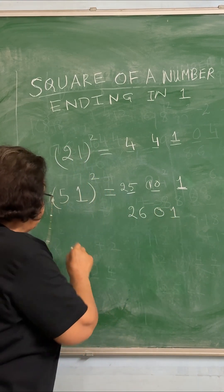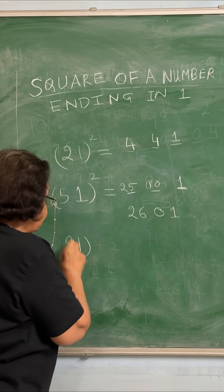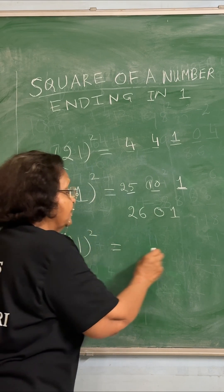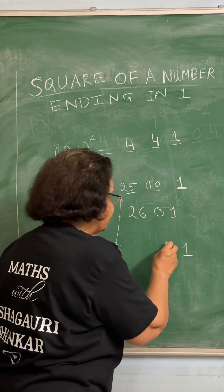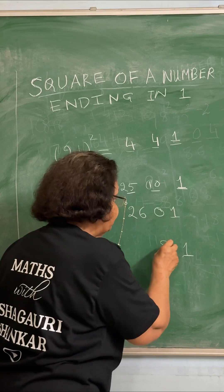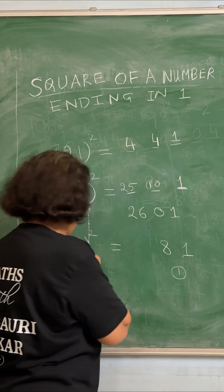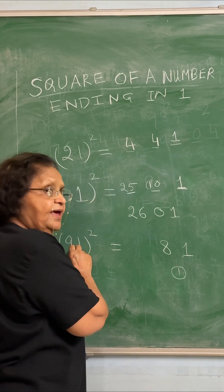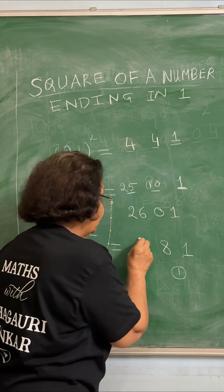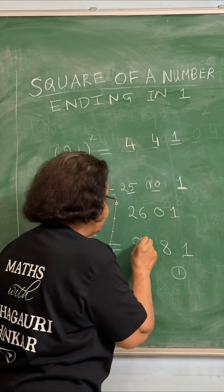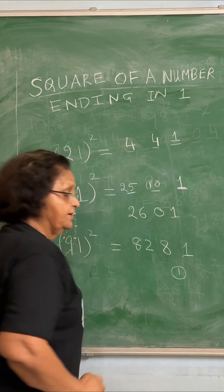If we want the square of 91, this will be 1. 9 twos are 18, so we will write the 8 and carry the 1. 9 nines are 81, plus the carried 1 which is 82, so we will write the 2 and carry the 8. So the square of 91 is 8281.